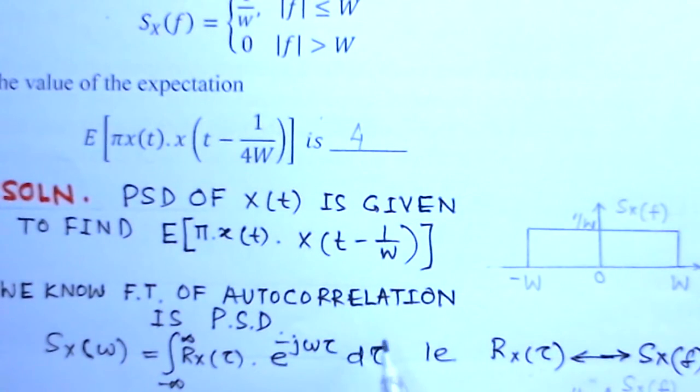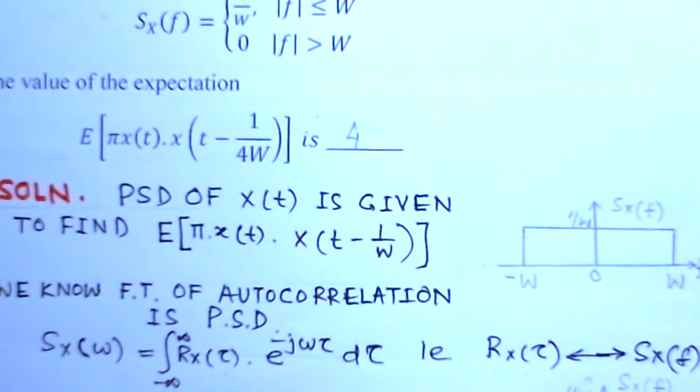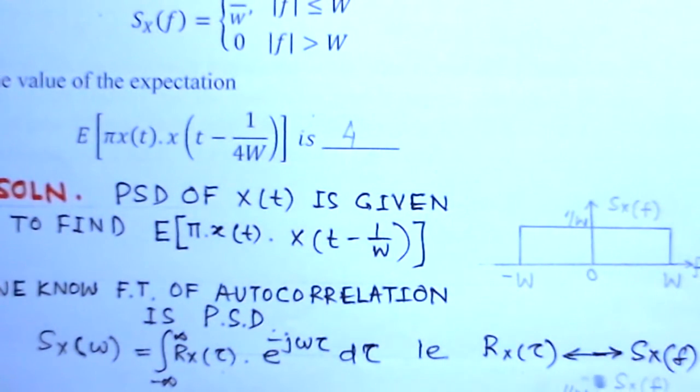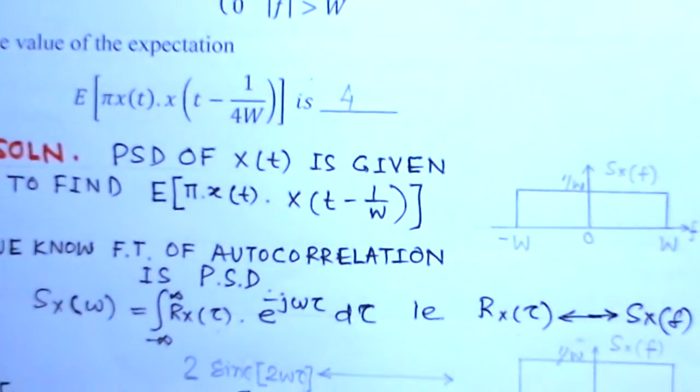We know that Fourier transform of the autocorrelation function gives me the power spectral density. That means Sx(ω) equals integral from minus infinity to infinity Rx(τ) e^(-jωτ) dτ. That is, Rx(τ) and Sx are transform pairs - one is in time domain, other is in frequency domain.